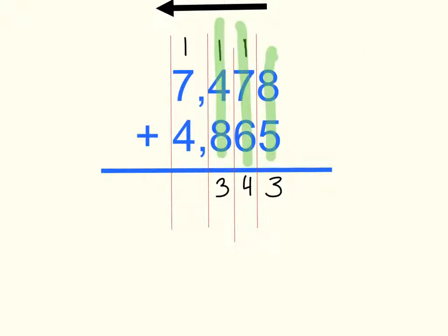Now I'm ready to add my last column of numbers, my thousands. 1, 7, and 4. 1 plus 7 plus 4 is 12. I can't have 12 thousands in my thousands column. 10 thousands is 1 10,000 and 2 thousands. So I put my 2 thousands in my thousands column, and my 1 10,000 over here in my 10,000 column. I don't have to carry it, because there's no numbers in the column above it. I can just put it right down in the answer.